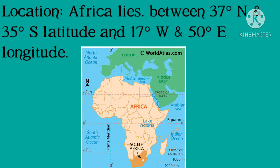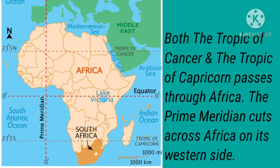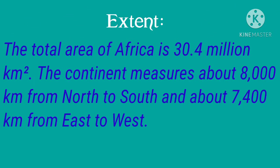Africa lies between 37 degrees north and 35 degrees south latitude, and 17 degrees west and 50 degrees east longitude. The equator almost passes through the center of Africa, hence it is also called the central continent. Both the Tropic of Cancer and the Tropic of Capricorn pass through Africa. The prime meridian cuts across Africa on its western side.